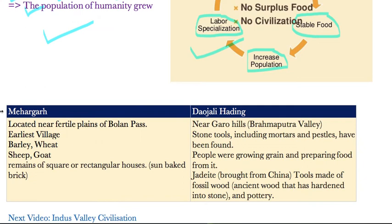Two particularly important sites from NCERT are Mehrgarh and Daojali Hading. Mehrgarh is located near the Bolan Pass foothills in Pakistan — it is the earliest village where the Indus Valley civilization would gradually develop. Wheat and barley were first cultivated here, and sheep and goat were first domesticated. Remains of square and rectangular sun-baked brick houses have been found. Daojali Hading, near the Garo Hills in the Brahmaputra Valley, has stone tools, mortars and pestles, jadeite brought from China, fossil wood, and pottery.